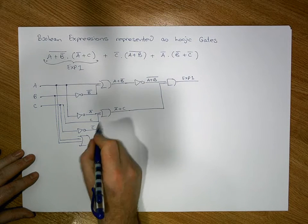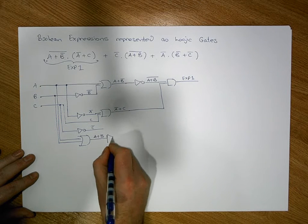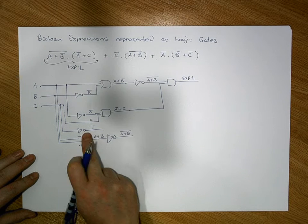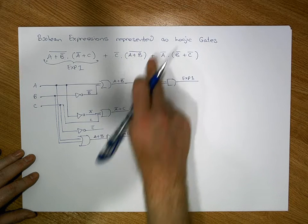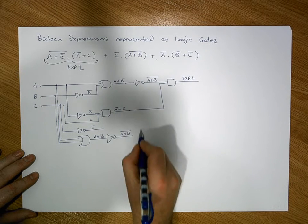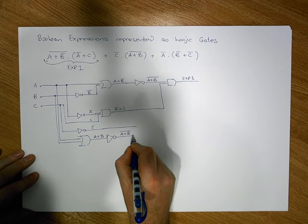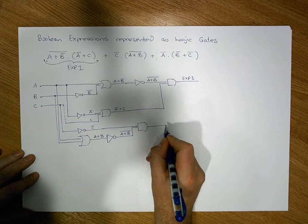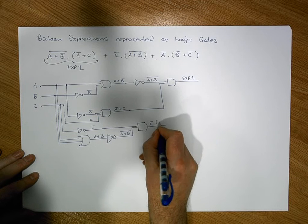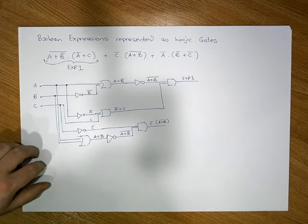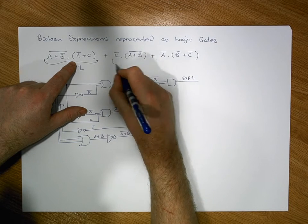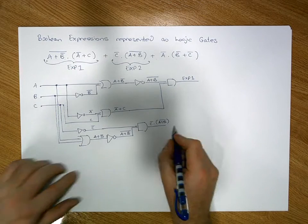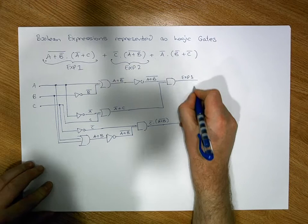Now that we have A OR B, we pass it into an inverter to give us (A OR B)-bar. We now have the left operand C-bar and the right operand (A OR B)-bar, so we pass them into an AND gate. The output is C-bar AND (A OR B)-bar, which is Expression 2. We then OR Expression 1 and Expression 2 together by passing both outputs into an OR gate.